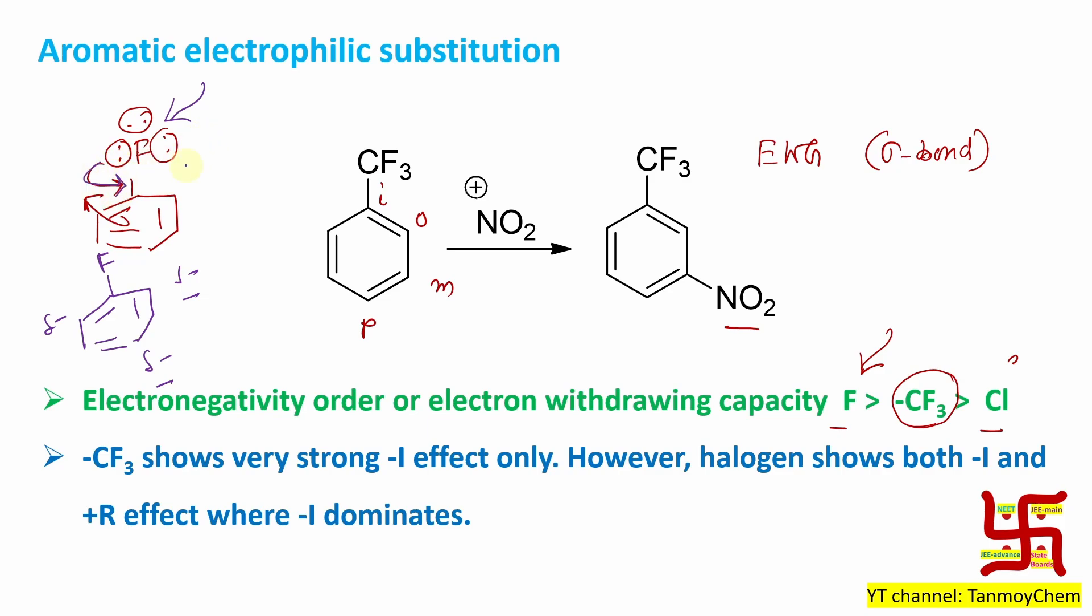This means two effects work in opposite directions: this donation, this resonance means plus R effect, and the higher electronegativity of this halogen results in sigma withdrawing from this carbon-halogen bond. That's indicated by minus I effect.